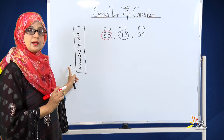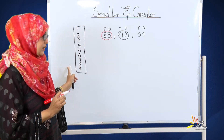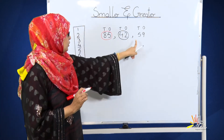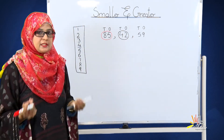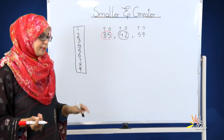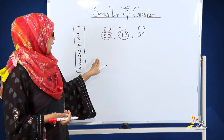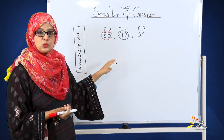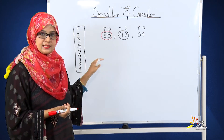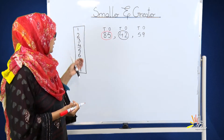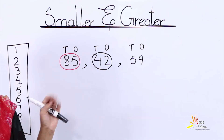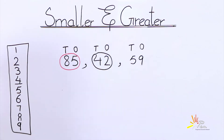The number at the end we will call the big number, and the number in the center we will not touch. Now we have done this with ones and tens. Let's move forward and we will do this question with ones, tens and hundreds.